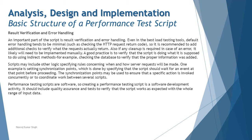The script may include other logic specifying rules concerning when and how server requests will be made. One example is to set a synchronization point, because sometimes the page may take a little longer to load and the script moves to the next line before it's ready — which is handled by specifying that the script would wait for an event at that point before proceeding to the next step. The synchronization point may be used to ensure that a specific action is invoked concurrently or to coordinate work between several scripts.